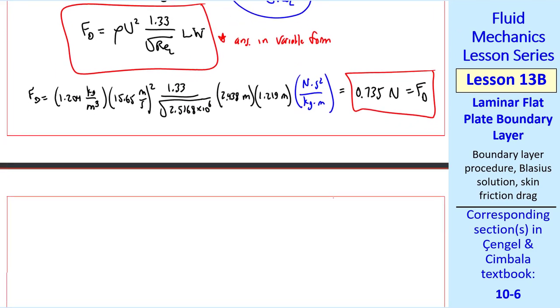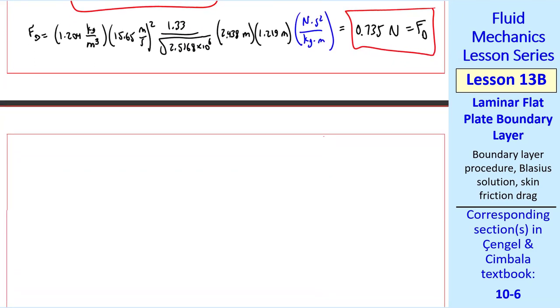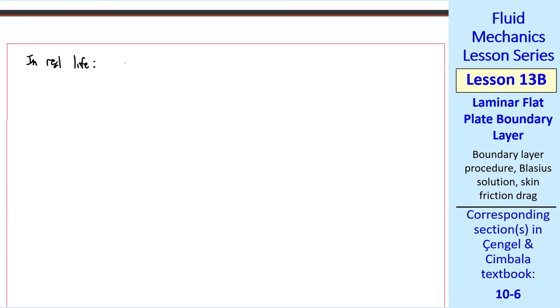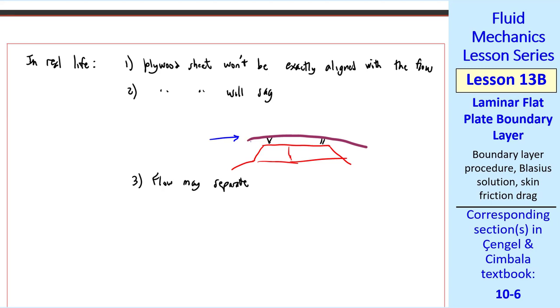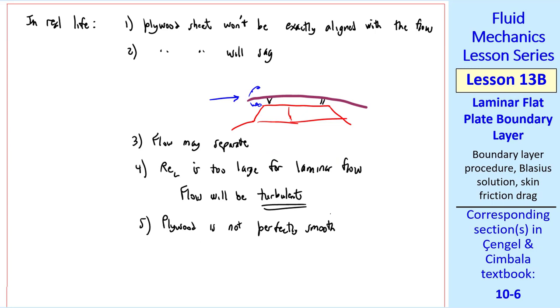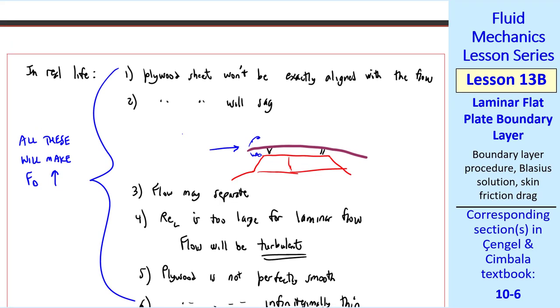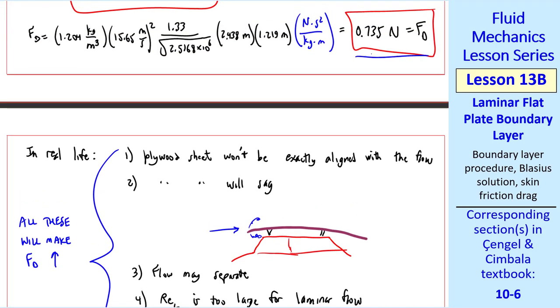This is a pretty small drag, since Newton is actually a very small unit of force. In fact, it's probably negligible compared to the total car drag. In real life, the plywood sheet won't be exactly aligned with the flow. In fact, it'll probably sag. The flow may separate, either on the top or bottom, or both. I've already pointed out that this Reynolds number is too large for laminar flow. The flow will be turbulent. The plywood's not perfectly smooth, and it's not infinitesimally thin either. All of these issues will make FD, the drag force, increase compared to this small number that we calculated up here.